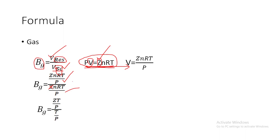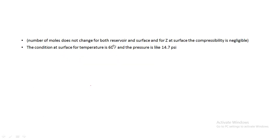The gas constant R cancels from both terms. Additionally, the number of moles at surface condition and at reservoir condition are the same, so n also cancels. Since at surface condition there is no significant compressibility, BG simplifies to ZT/P at reservoir condition divided by T/P at surface condition.